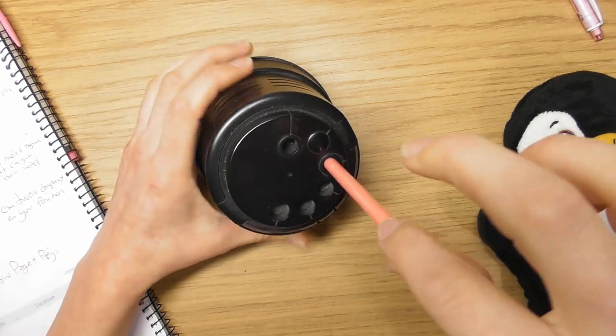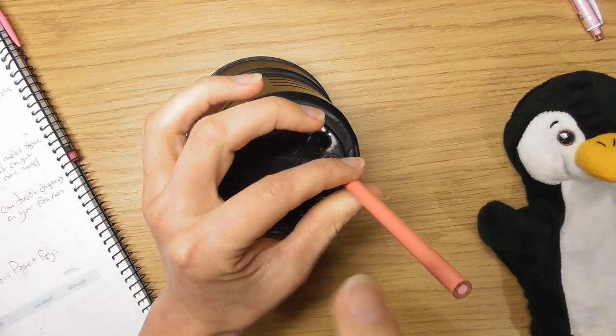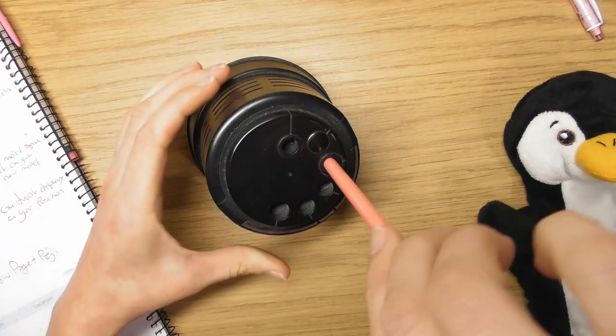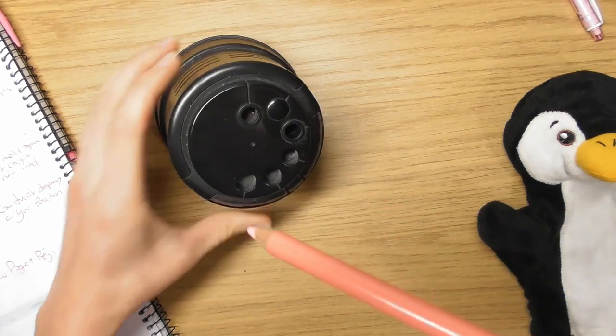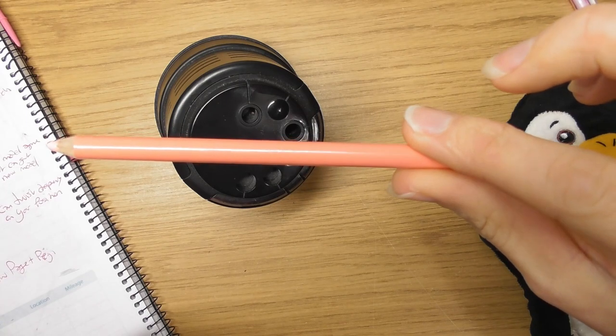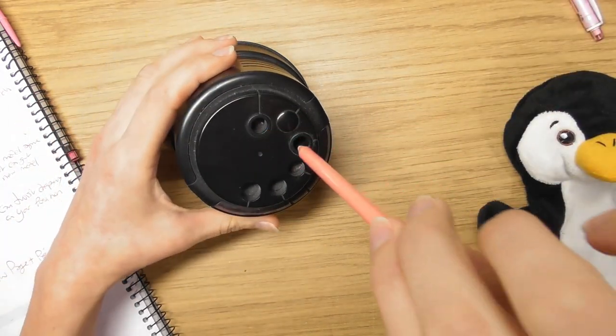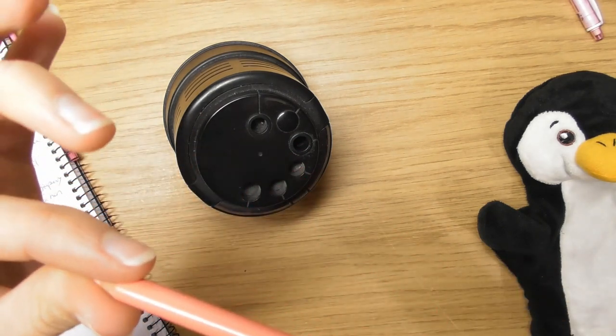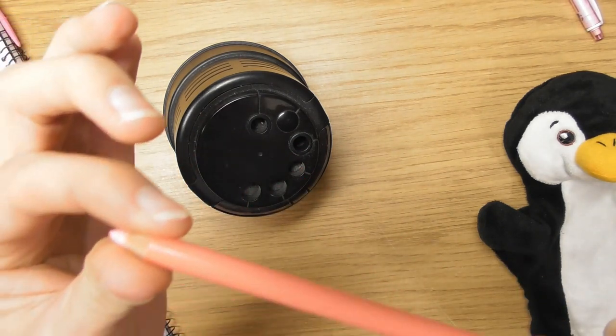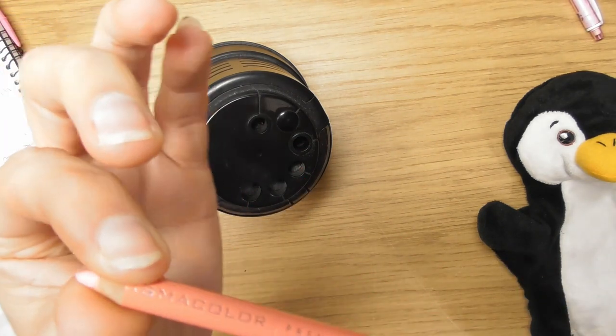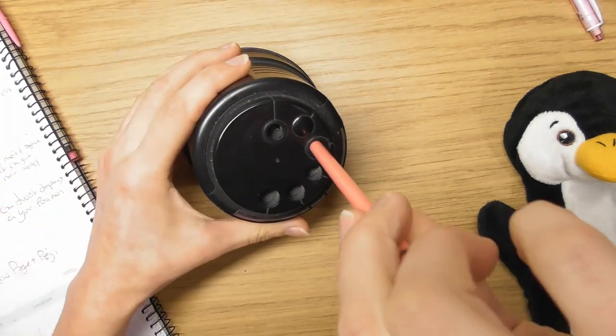So what you do is you put your pencil in there and it's actually going to twist this way to sharpen it, but if you sort of gently, ever so gently twist the pencil and push a little tiny bit, what it does is your movement of moving the pencil goes against the sharpening and it just feels hell of a satisfying.